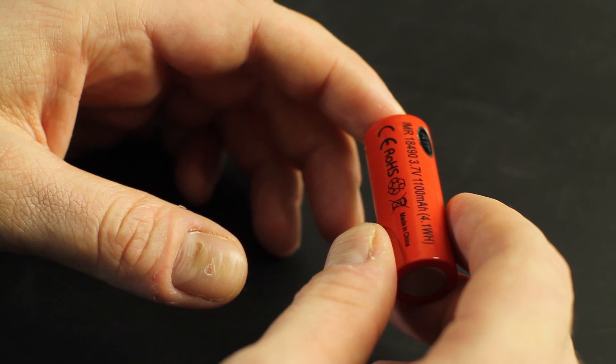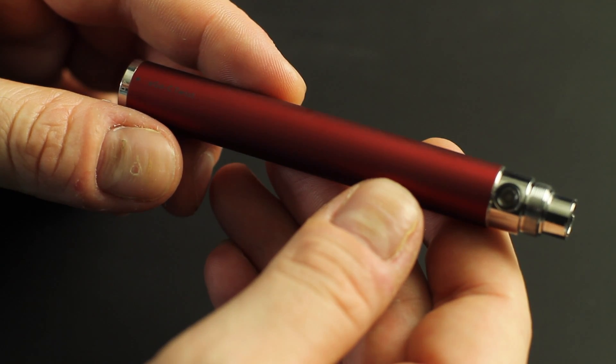So today I'm going to be focusing on the AW IMR batteries and the Ego C Twist, which are the two most common batteries used in the vaping community. So here we go.